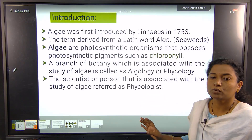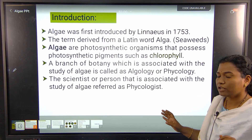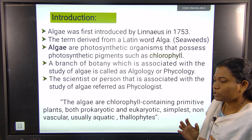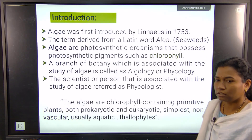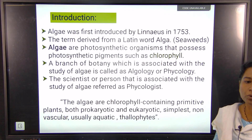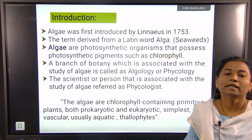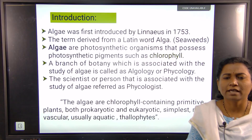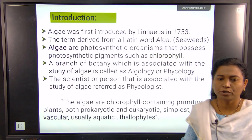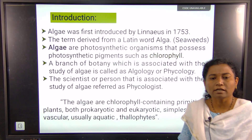The branch of botany that studies algae is called algology or phycology, and the scientist who studies algae is referred to as a phycologist. By definition, algae are chlorophyll-containing primitive plants, both prokaryotes and eukaryotes — the simplest, non-vascular, and usually aquatic thallophytes, meaning they have simple forms not differentiated into roots, stems, or other organs.